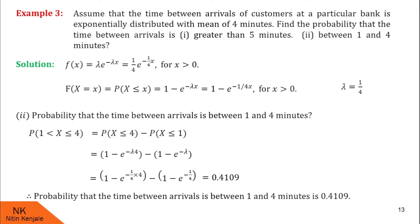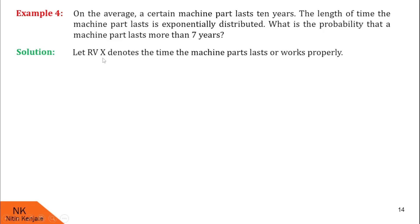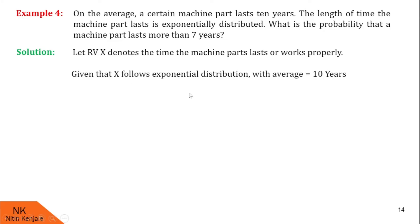Now let us proceed to the last example. On average, a certain machine part lasts 10 years — this is the mean of x. The length of time the machine part lasts is exponentially distributed. We are asked: what is the probability that a machine part lasts more than 7 years? Let random variable x denote the time the machine part lasts. Given x follows exponential distribution with average (mean) = 10 years, therefore lambda = 1/10.